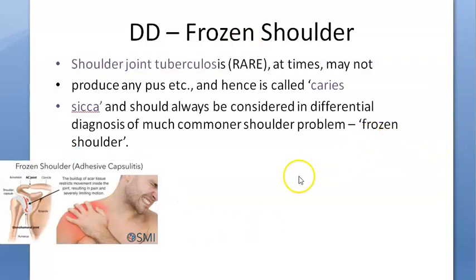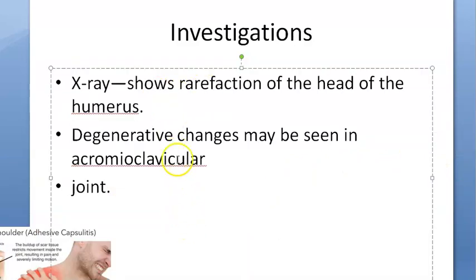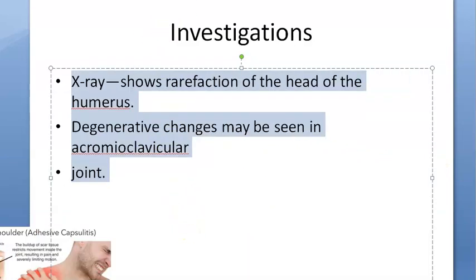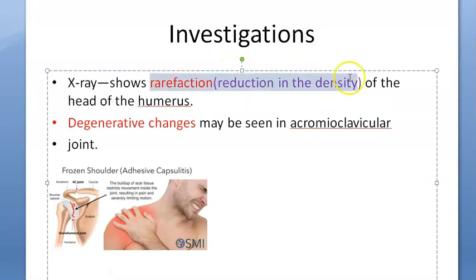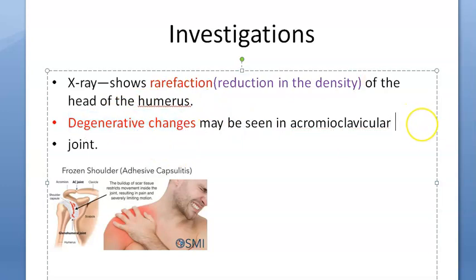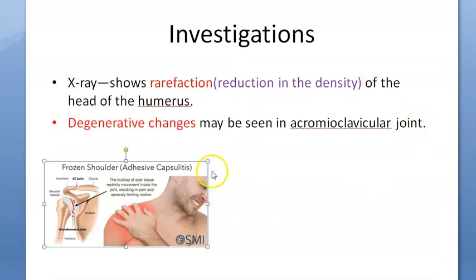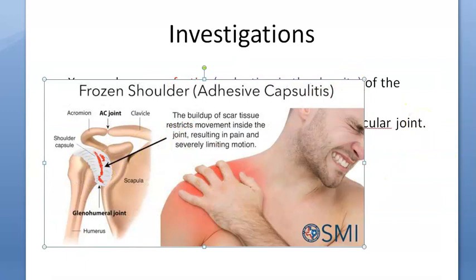For investigations, you can take an X-ray. What will you see? There will be rarefaction of the head of the humerus - meaning reduction in density of the head of humerus. Degenerative changes may also be seen in the acromioclavicular joint. The shoulder joint is the glenohumeral joint, while the acromioclavicular joint is the joint between the acromion and clavicle.